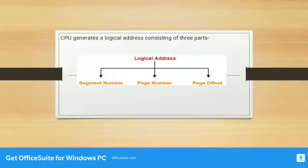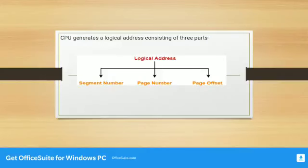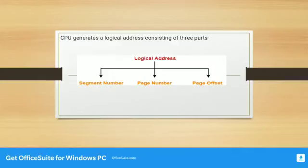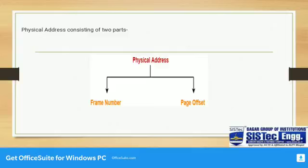In Segmented Paging, the CPU address is divided into three parts. We know that if we have to work on main memory, we have to convert the logical address to the physical address. In Segmented Paging, the logical address has three components: Segment Number, Page Number, and Page Offset.